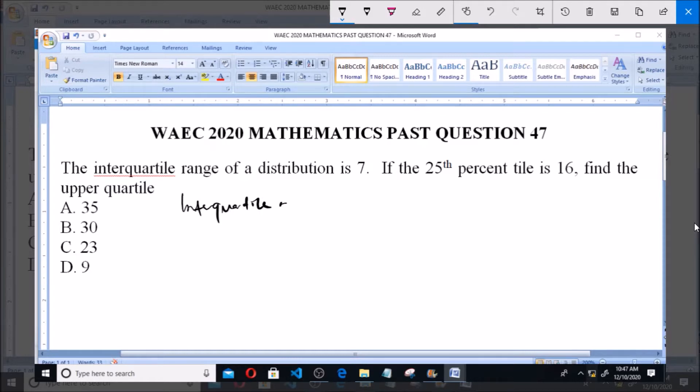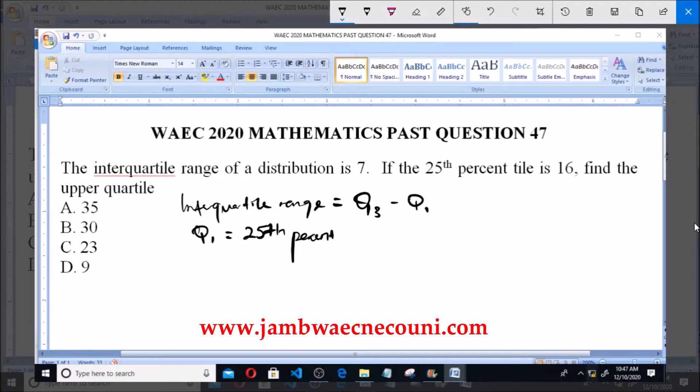Interquartile range is given as Q3 minus Q1. This is the upper quartile and this is the lower quartile. Now Q1 is also equivalent to the 25th percentile because Q1 equals the total number of given data over 4, that is n/4.